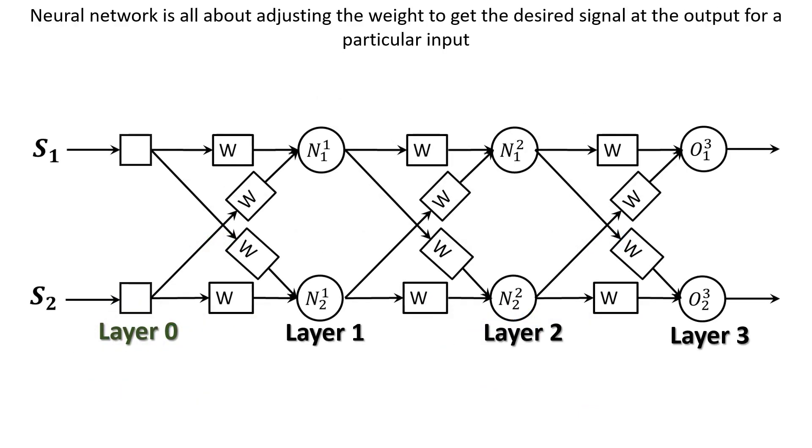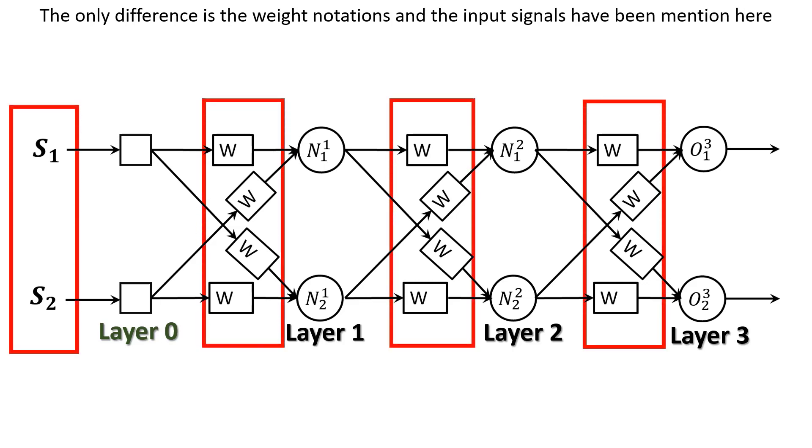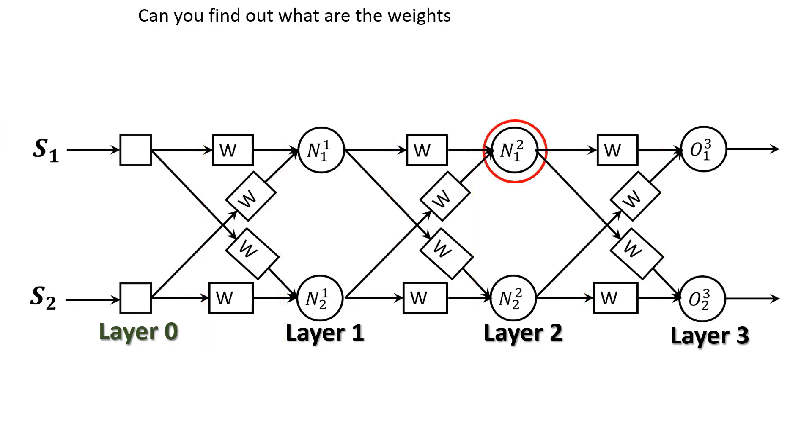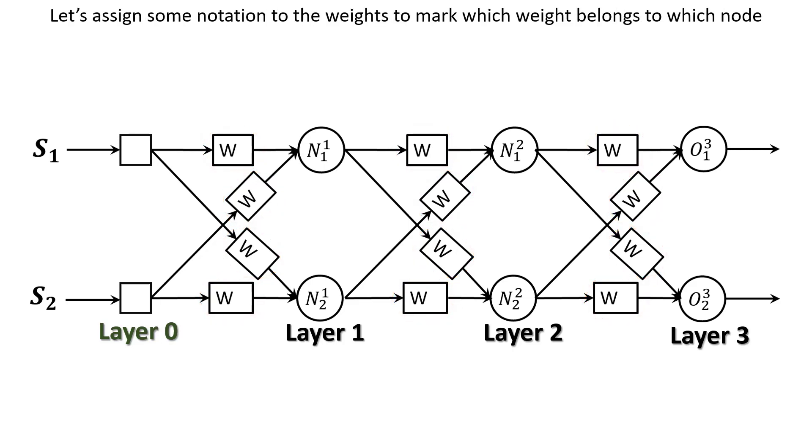Neural network is all about adjusting the weight to get desired signal at the output for a particular input. This is the same multi-layer neural network we have been working with. The only difference is the weight notations and the input signals have been mentioned here. Can you find out what are the weights associated with this node? We can see there are W and W. If the question is, which node has W weight? Now it looks really messy because every node has W weight.